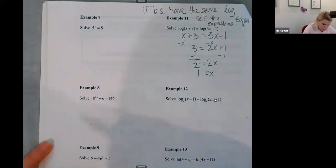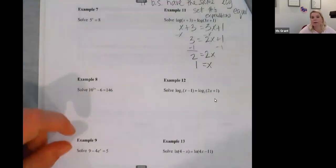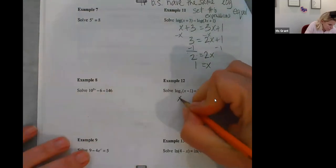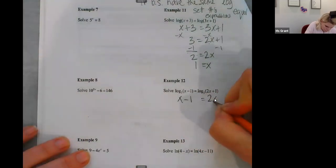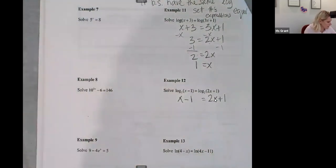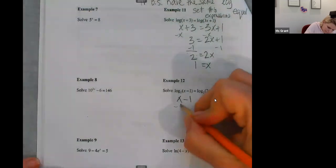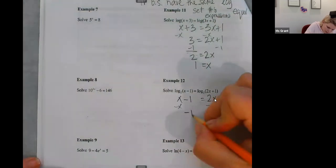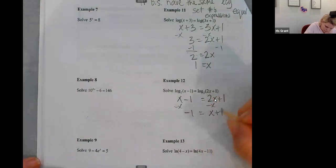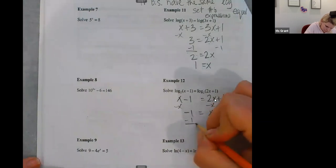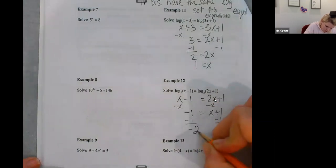Let's do number 12. Same thing. They both have base two. Set them equal to each other. And again, this is super easy, guys. Negative one equals x plus one, so negative two equals x.